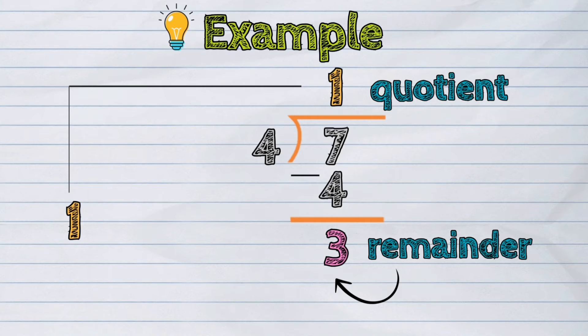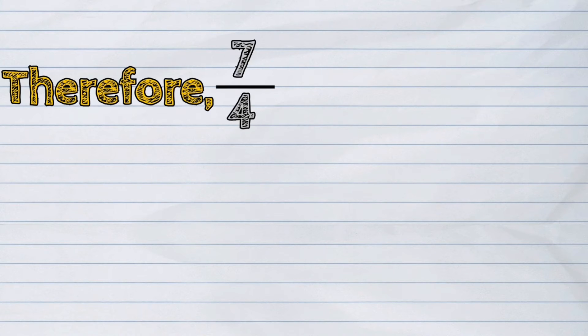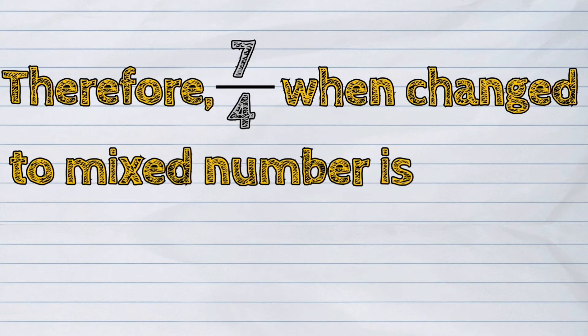Our remainder, which is 3, becomes our numerator. And 4, which is our denominator in the improper fraction, remains our denominator in the mixed number. Therefore, 7 fourths when changed to mixed number is 1 and 3 fourths.